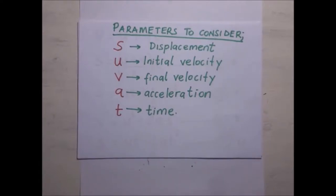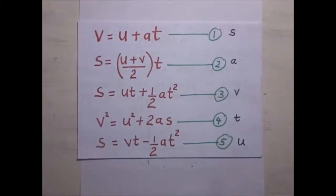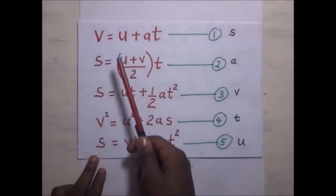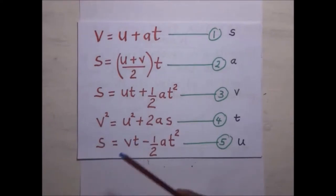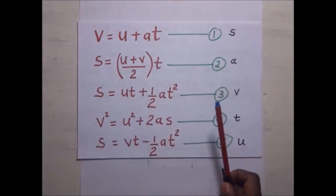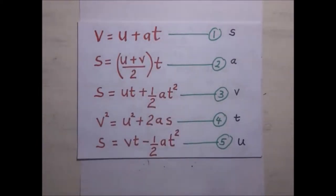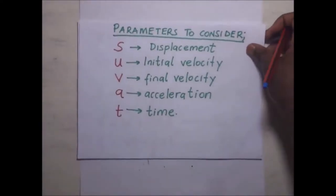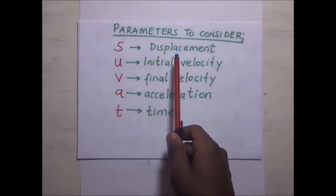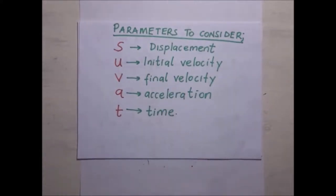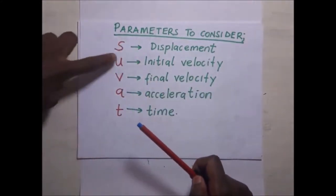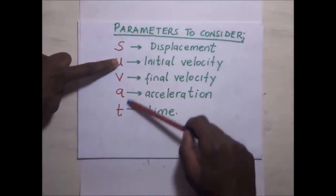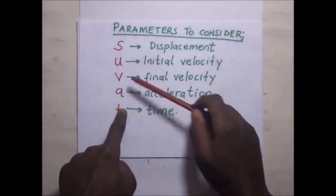The five equations of motion we are trying to derive are: v = u + at, a displacement equation, v² = u² + 2as, and two others. In each and every equation, notice that one parameter is missing. For example, in one equation s is missing, in another u is missing, in another t is missing, and so on.